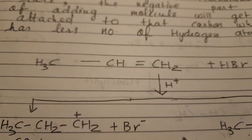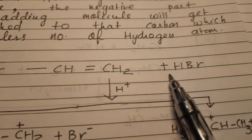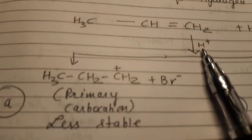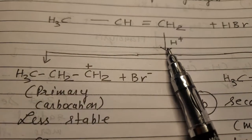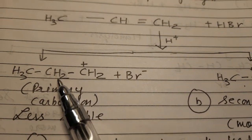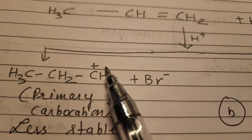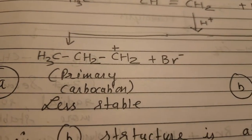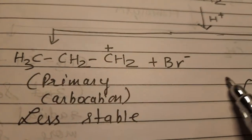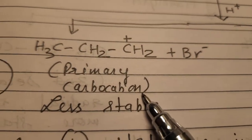Now let's look at the mechanism. Propene: CH3-CH=CH2 plus HBr. HBr dissociates — H⁺ ion is separated. H⁺ is added to the terminal CH2 carbon. This forms CH3-CH and CH2, but because of the single bond now, that terminal CH2 carbon gets a positive charge, becoming a carbocation.